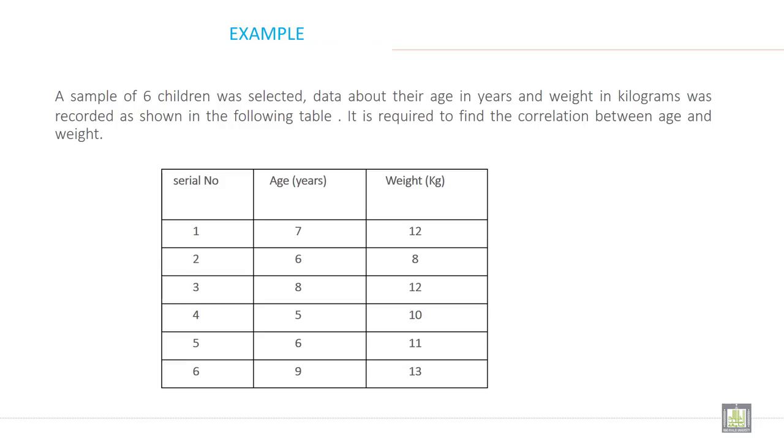Let's try to understand this formula with an example. A sample of six children was selected. Data about their age in years and weight in kilograms was recorded as shown in the following table. It is required to find the correlation between age and weight. This serial number is not so much important in correlation analysis.